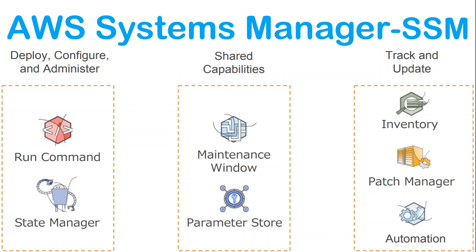Under the shared capabilities, you have Maintenance Windows and Parameter Store. For production databases, for example, you don't want to take systems offline during weekdays — probably on a Sunday midnight you want to give a maintenance window so that admin or other teams can perform maintenance activities. You define maintenance windows based on tagging of environment, naming convention, or other infrastructure features. The Parameter Store helps you keep your secrets, environment variables, licenses, or API keys, and you can use those values in any of your Lambda scripts or Run Command scripts.